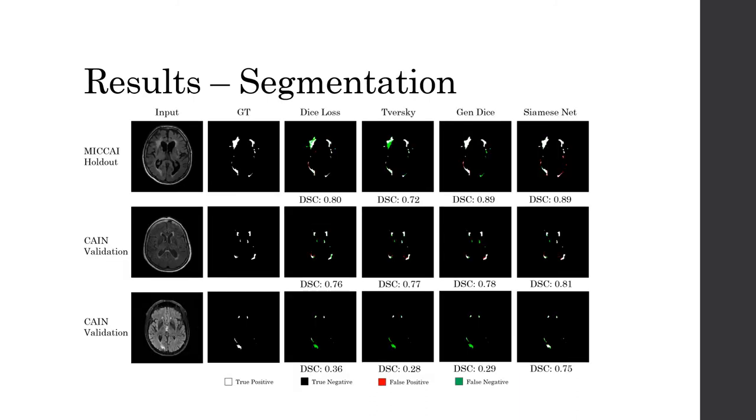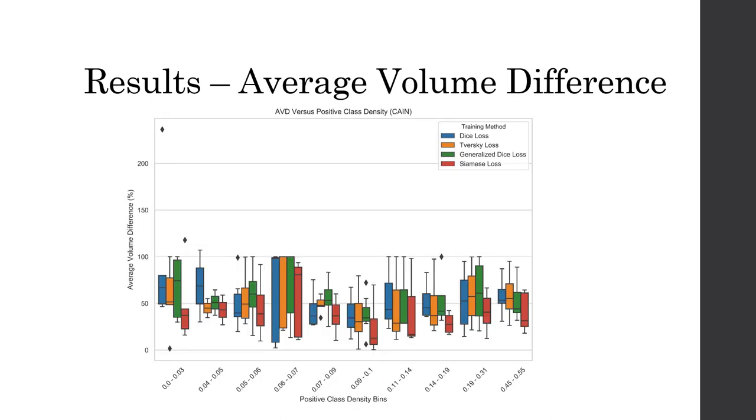The results of our method showed greater generalizability with significantly high DSE scores across datasets. We also quantified the effects of class imbalance and showed consistently low average volume differences across the severities of class imbalance.